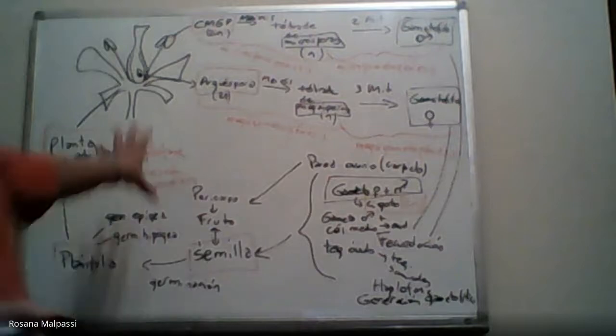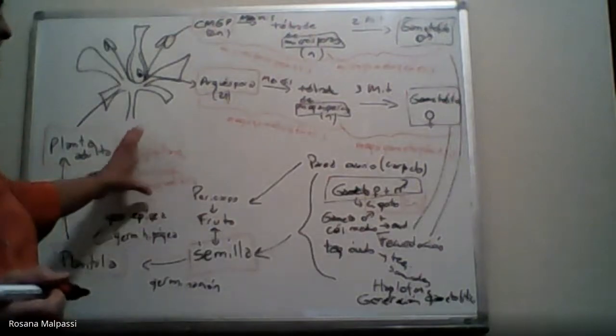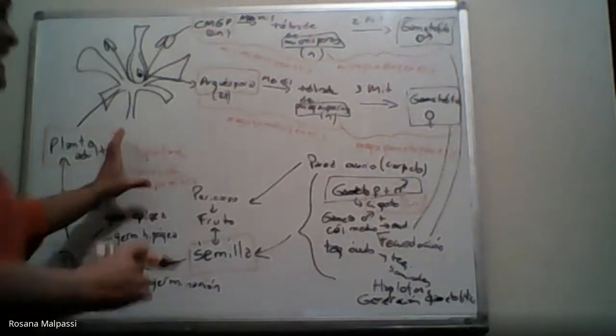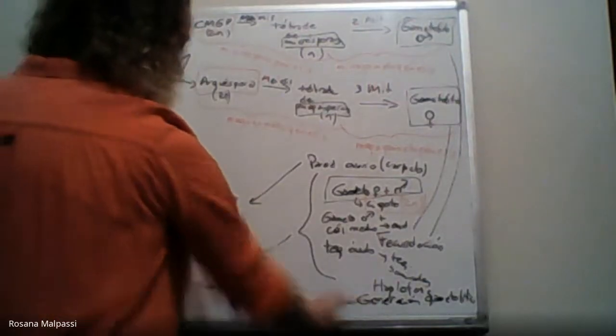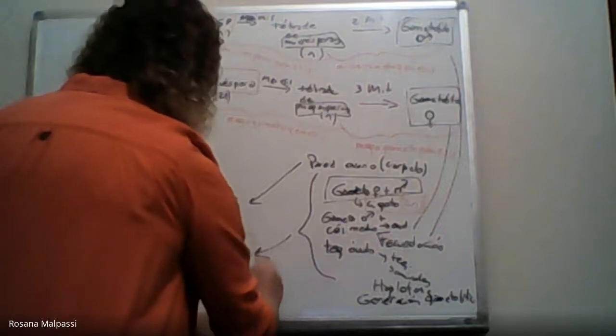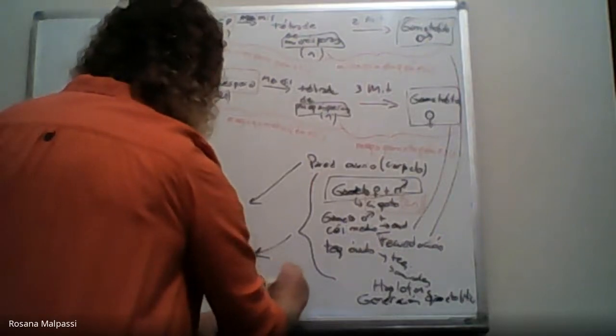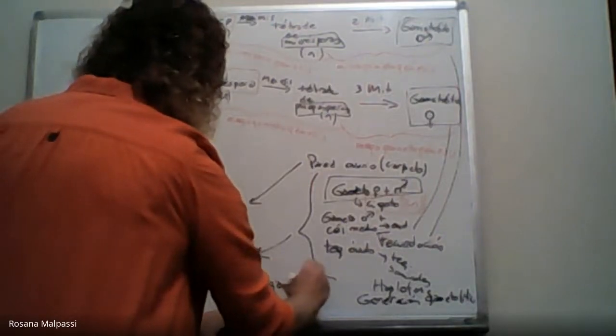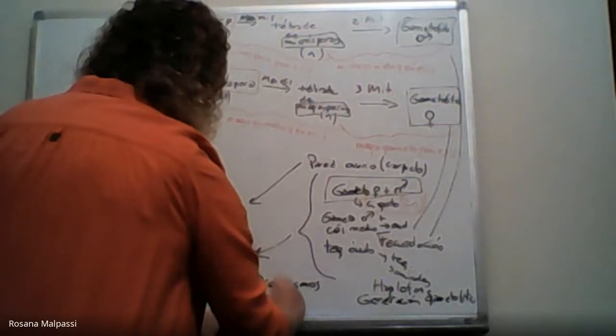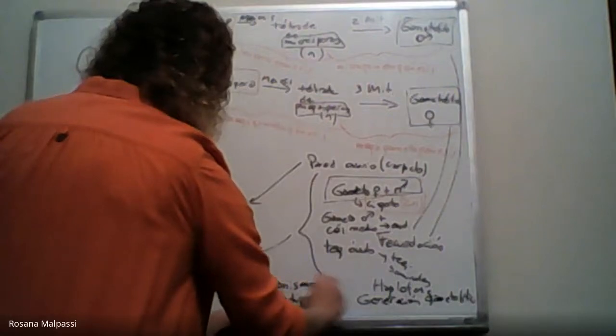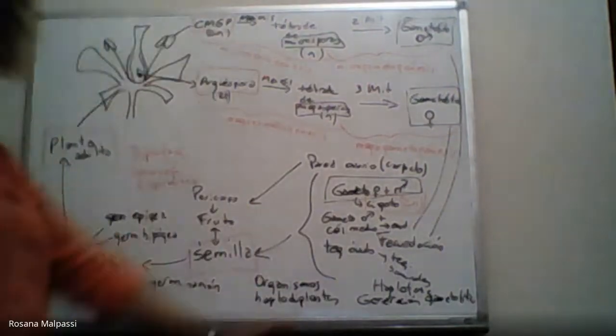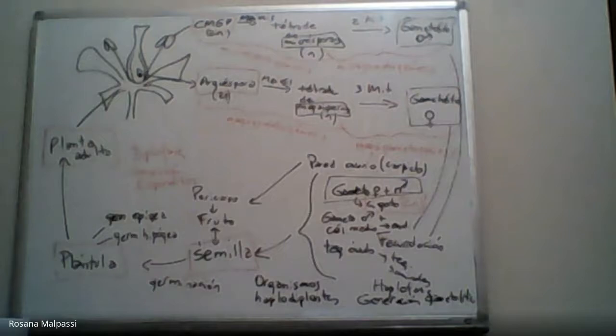Como la diplofase con la generación esporofítica alterna con la haplofase generación gametofítica, se dice que estos organismos son haplodiplontes. Y cuando hablamos de organismos nos estamos refiriendo a todas las plantas superiores.